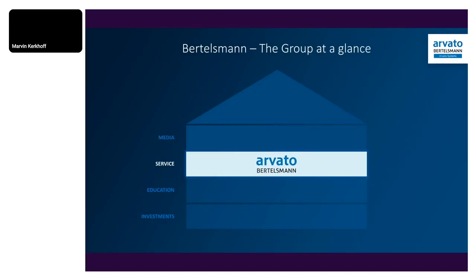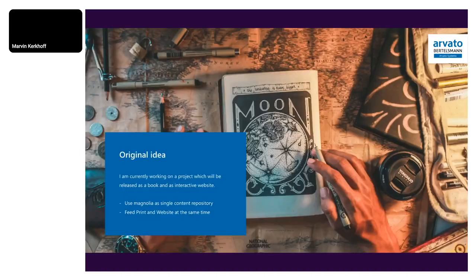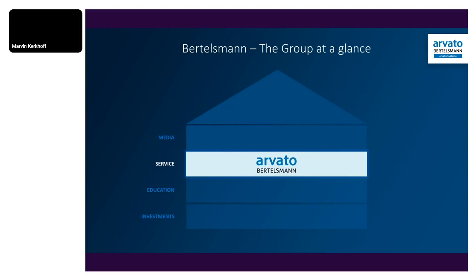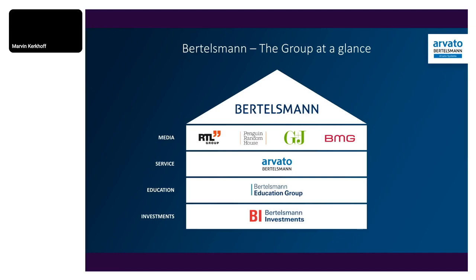The original idea — why I started this journey — was a private project: a book I'm working on, released as both a print product and an interactive website, with all data provided by Magnolia. That data should also feed the InDesign print script. As you might know, Arvato Systems is part of the Bertelsmann group, so printing solutions are in our DNA.